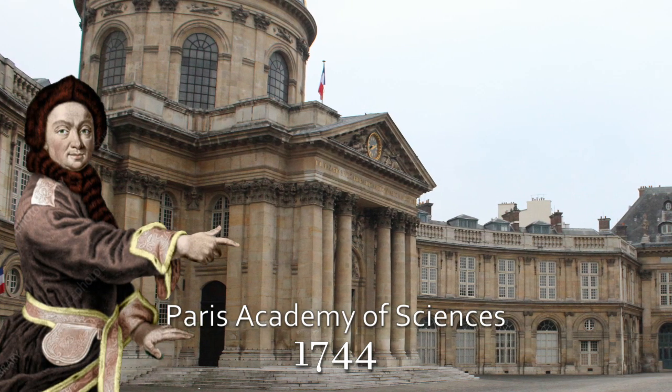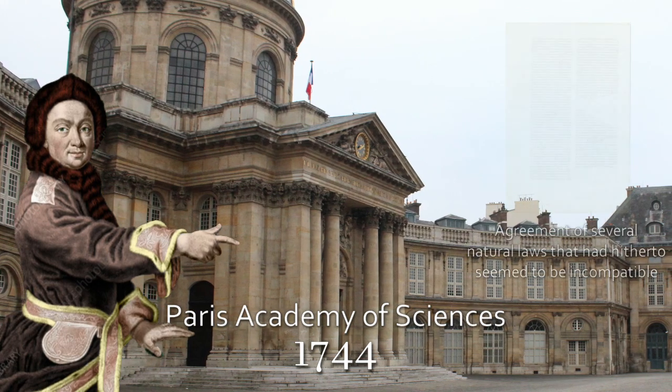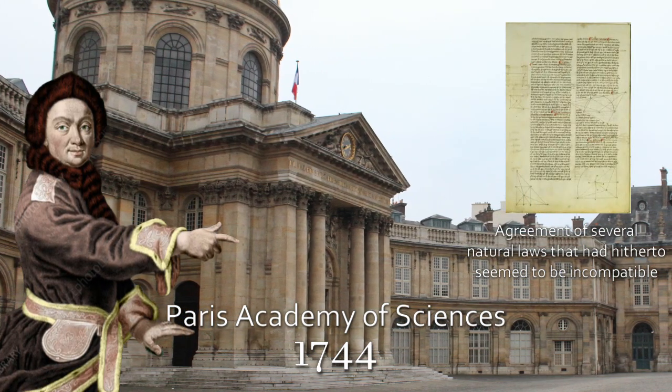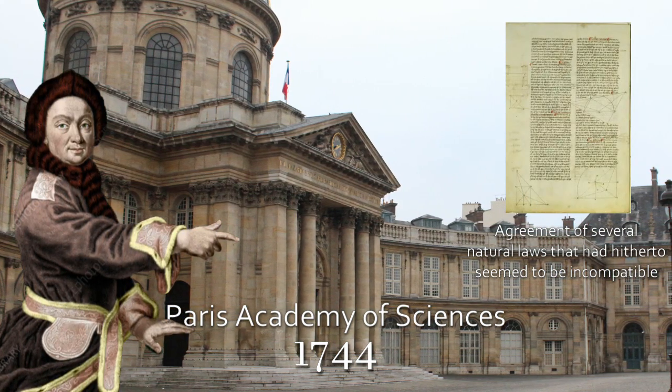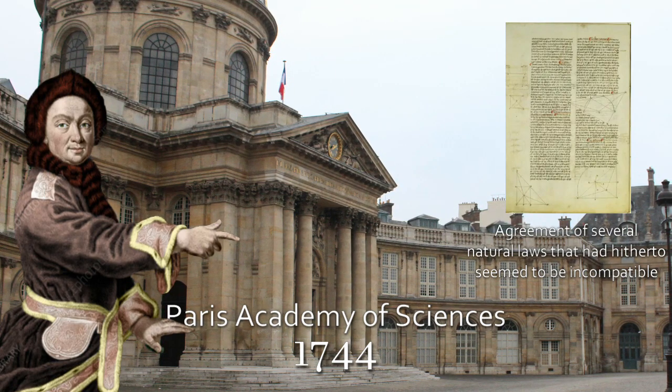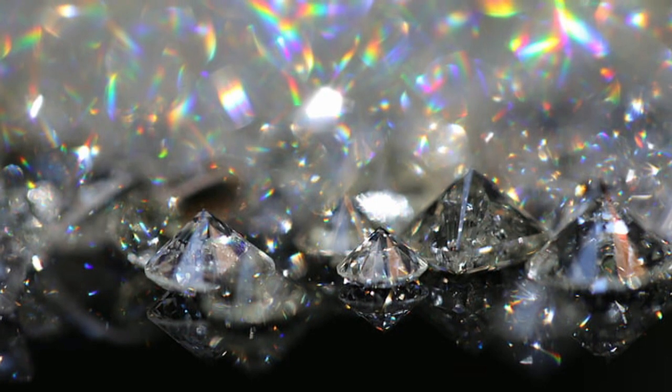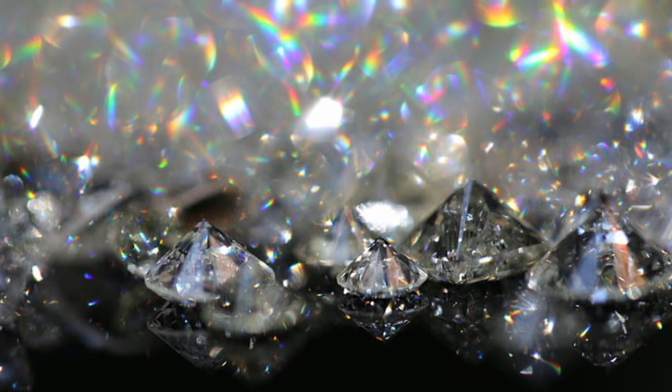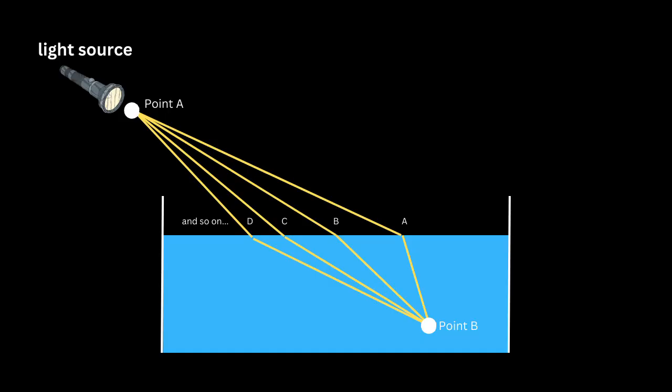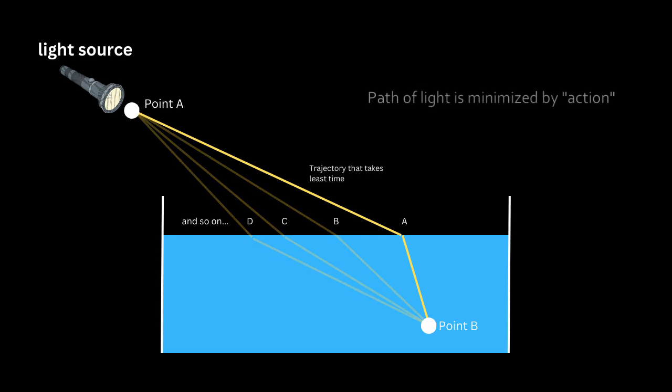In 1744 he presented another paper to the Paris Academy entitled Agreement of several natural laws that had hitherto seemed to be incompatible. This work showcased his findings on the behavior of light during refraction, where it bends upon entering a new medium. He revealed that the total path taken by light from a point in the first medium to the point in the second is optimized to minimize a quantity he once again identified as action.